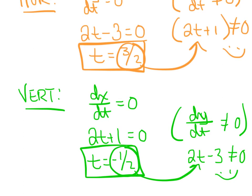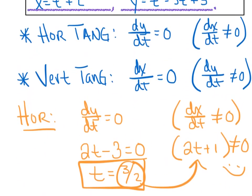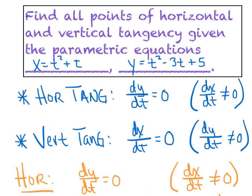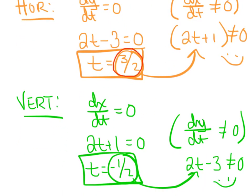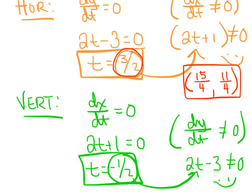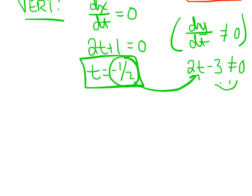The directions said to find all points, not just t-values. So plug each value back into both parametric equations. For t = 3/2: x = (3/2)² + (3/2) = 15/4 and y = (3/2)² - 3(3/2) + 5 = 11/4. That's the point (15/4, 11/4) for the horizontal tangent. For t = -1/2: x = -1/4 and y = 27/4. That's the point (-1/4, 27/4) for the vertical tangent.